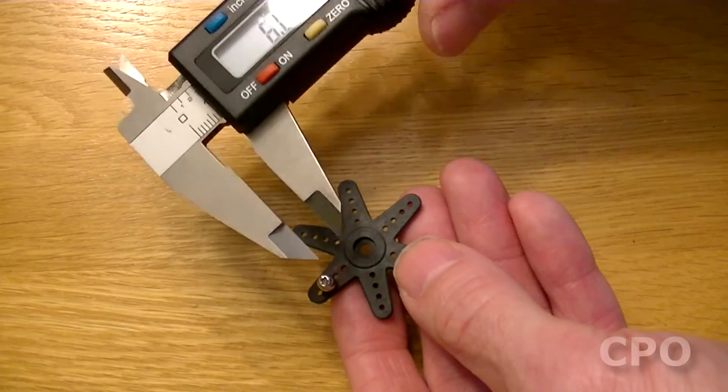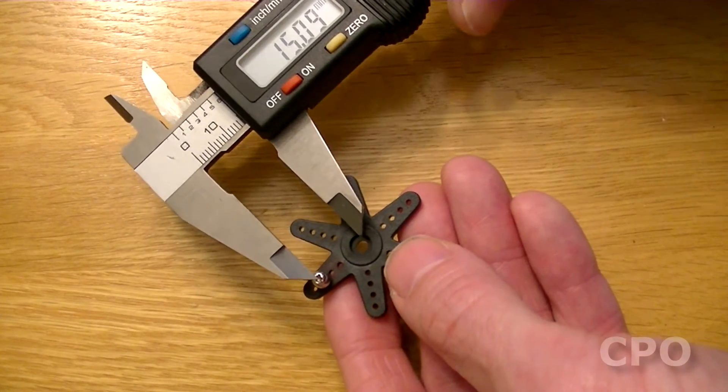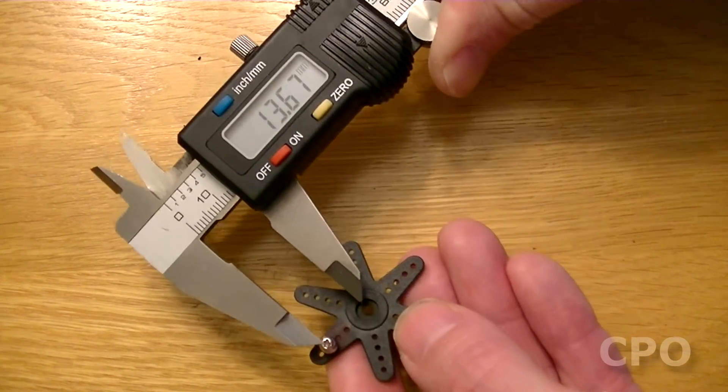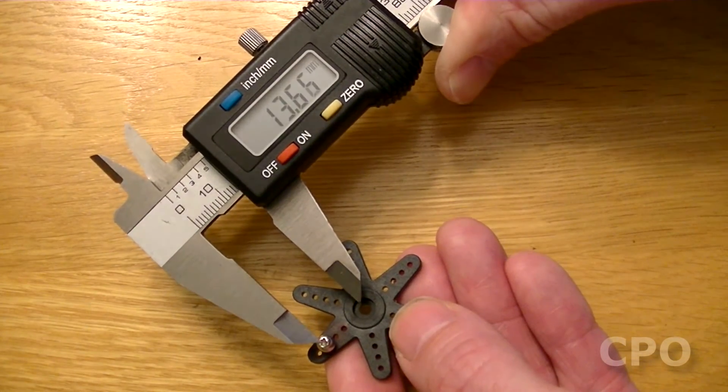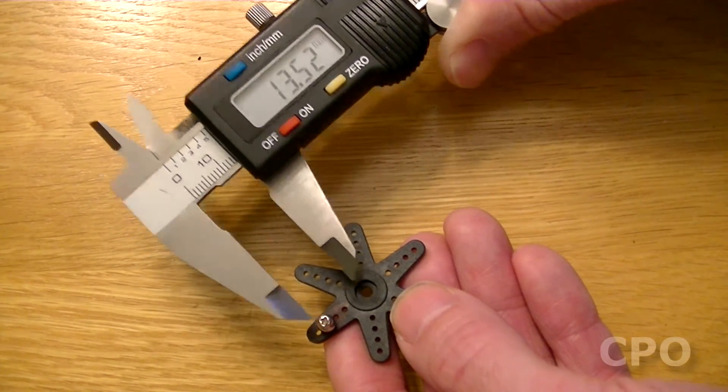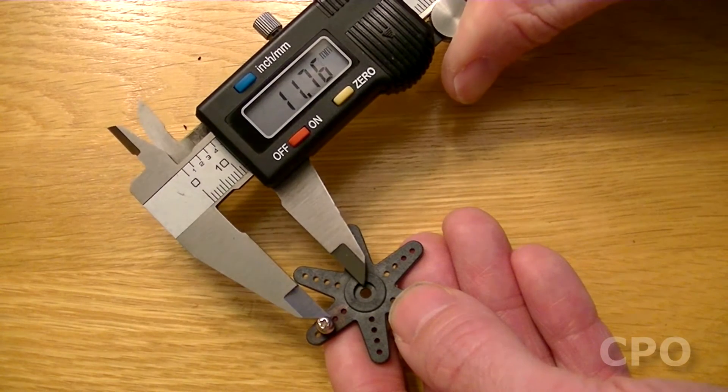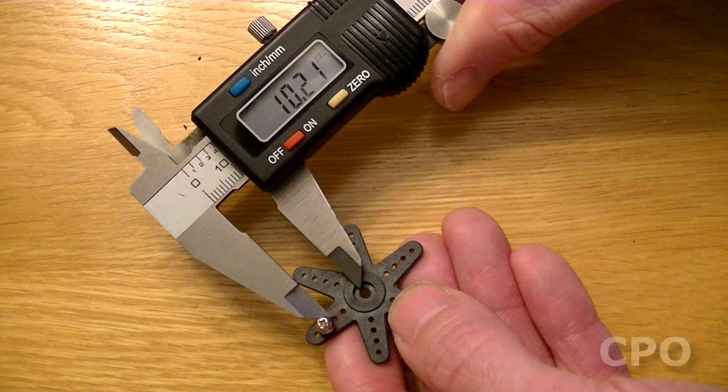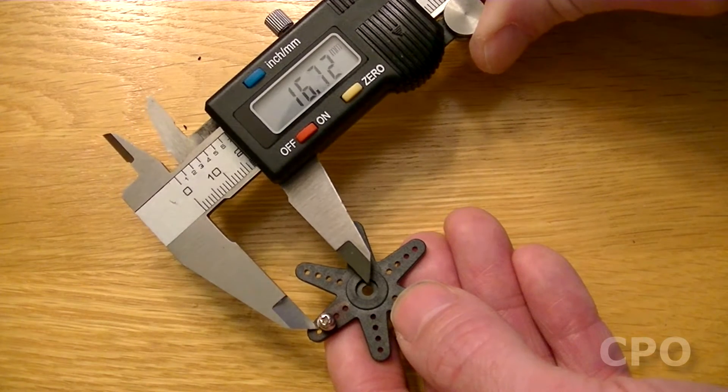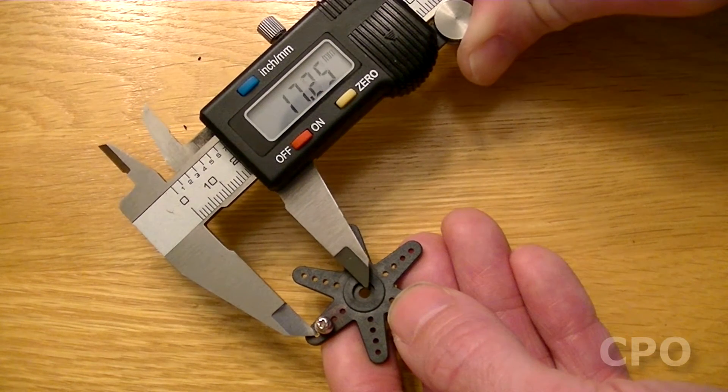And when I measure that, that looks to be about 13 millimeters, 13 and a half millimeters. And just for reference, the hole that's before that, the third from the outside or second from the inside is about 10 millimeters. And then the outside hole is somewhere around 16 and a half millimeters.